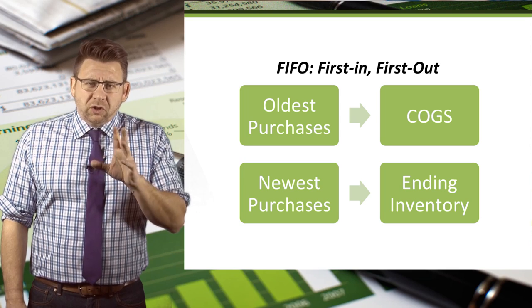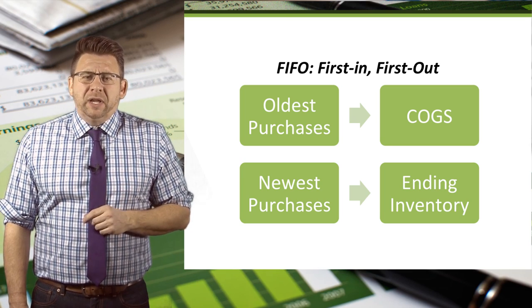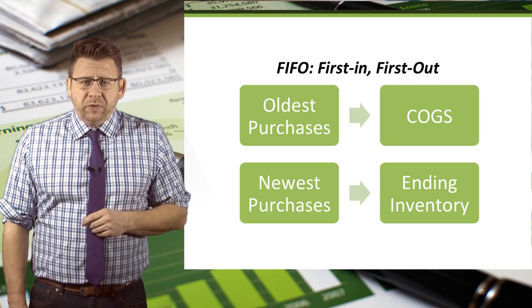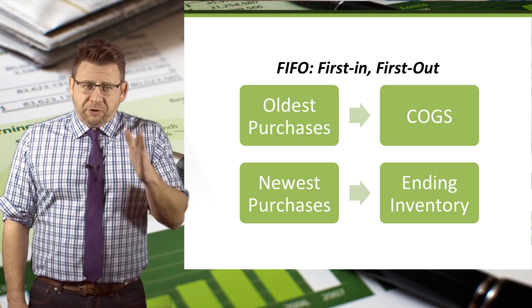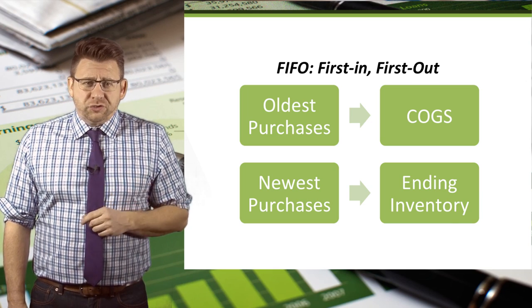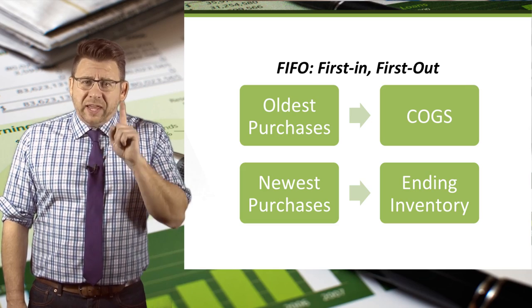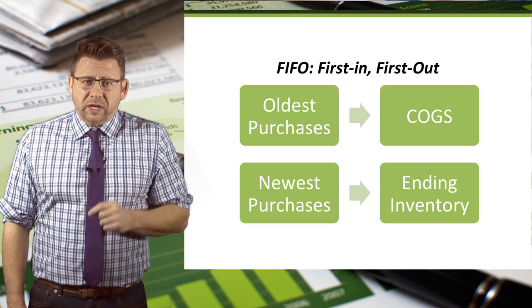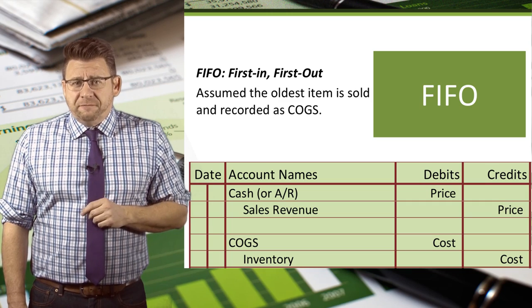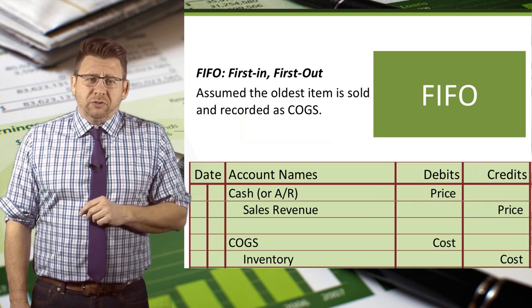Most physical goods flow this way. Almost every perishable item in a grocery store physically moves like FIFO — the oldest milk is in the front of the dairy case. But that doesn't mean that all grocery stores use FIFO to value their inventory. Remember, they can use any method they want. When a company makes a sale using FIFO, the cost of goods sold is assumed to be the oldest item purchased.